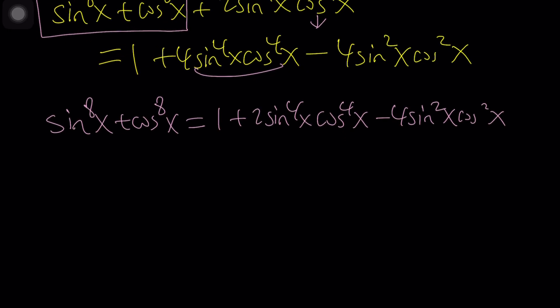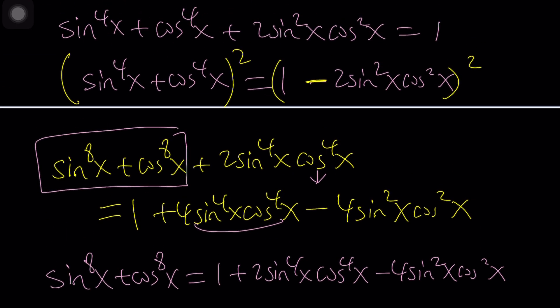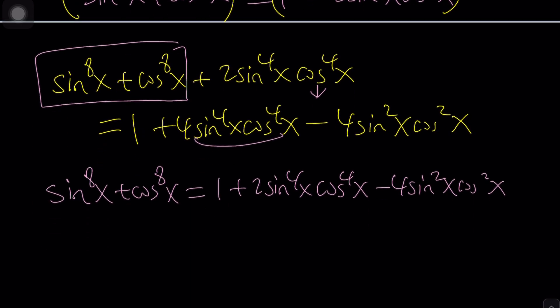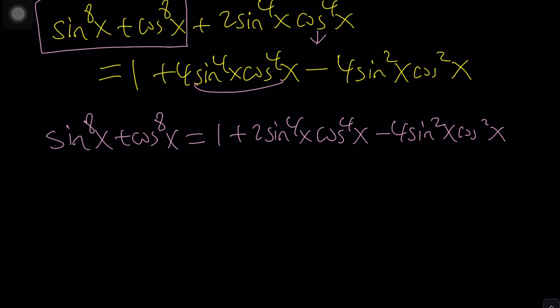Now one thing to keep in mind is we do know what the sum of eighth powers is which is 97 over 128. So I'm going to replace this with 97 over 128 so I can come up with an equation with a single variable.